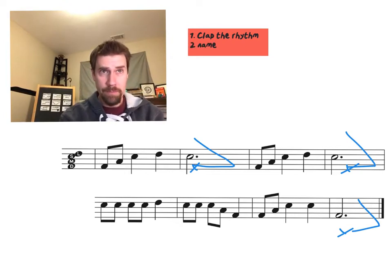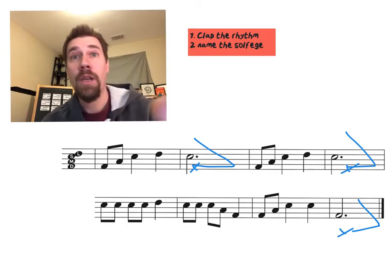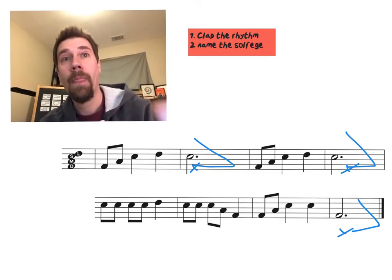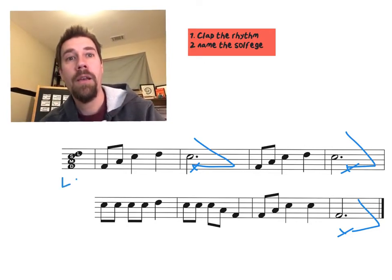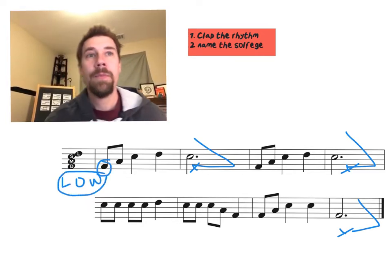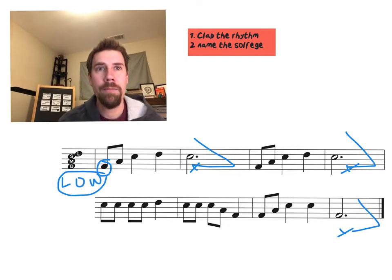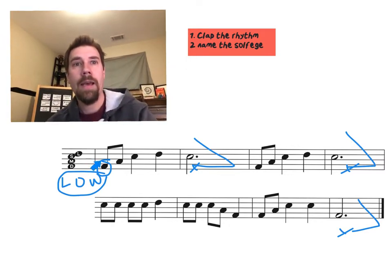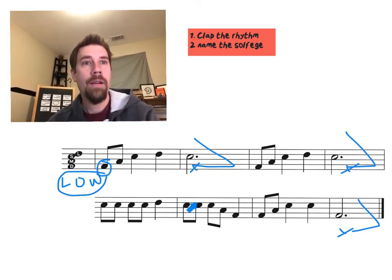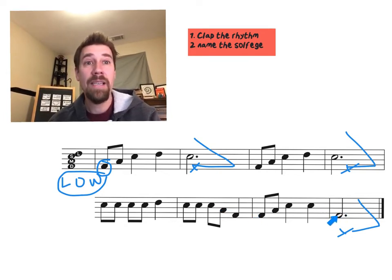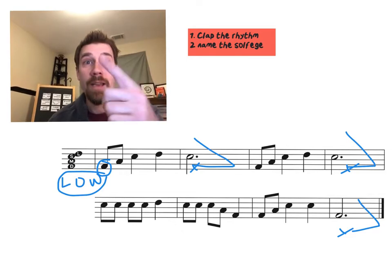Step two is name the solfege. Let's take a look at the solfege. We've got that new thing low in this song, and it's right there. See how many times it happens in the song? I got it here, I got it there, I got it there, and there, and there. So it ends on low, and it starts on low, that'll help us out.